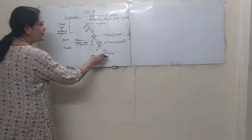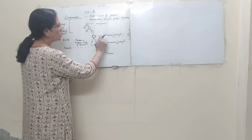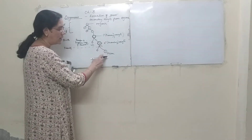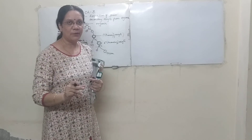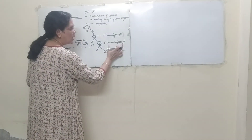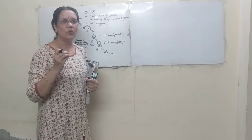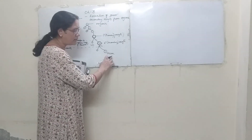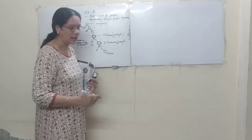Here we get the formation of the ovum from the secondary oocyte. This second meiotic division occurs only when fertilization takes place. So inside the ovary you will find only the secondary oocyte. The egg that is released from the ovary is not the ovum but rather the secondary oocyte.